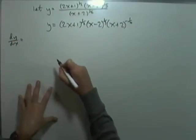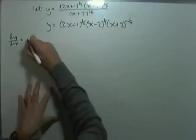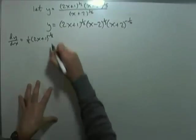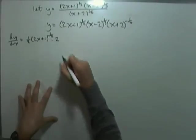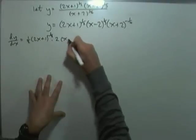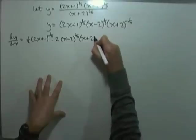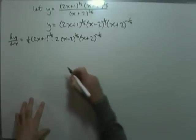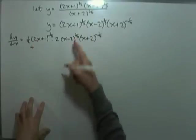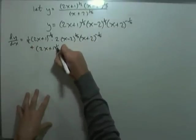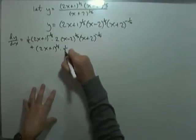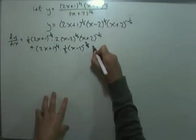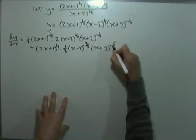dy/dx equals: differentiating the first factor — a half times (2x + 1)^(−1/2) times 2, the derivative of the inner function — then leave the other two alone: times (x − 2)^(1/3) times (x + 2)^(−1/4). Plus: leave the first alone — (2x + 1)^(1/2) — times one third times (x − 2)^(−2/3) times 1, leave the last alone times (x + 2)^(−1/4).